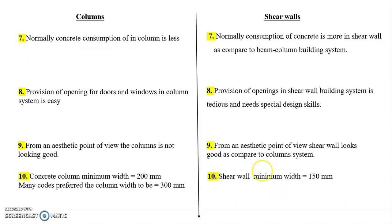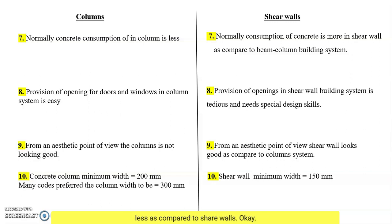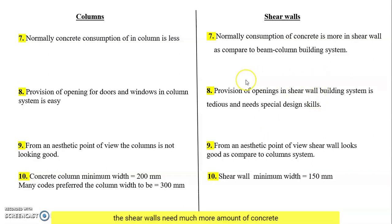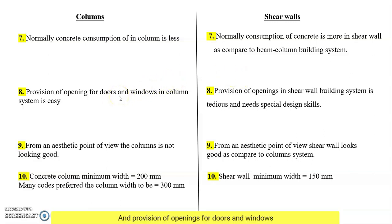Normally, concrete consumption in columns is less as compared to shear walls. Concrete consumption is more in a shear wall system as compared to a beam-column building system, because shear walls need a much greater amount of concrete compared to columns.